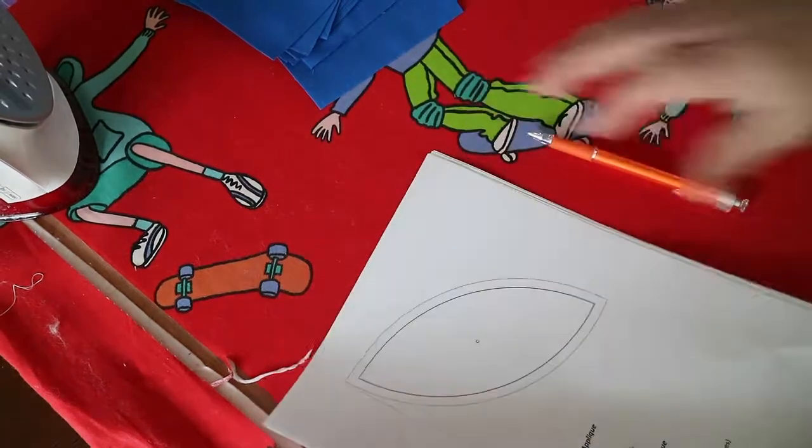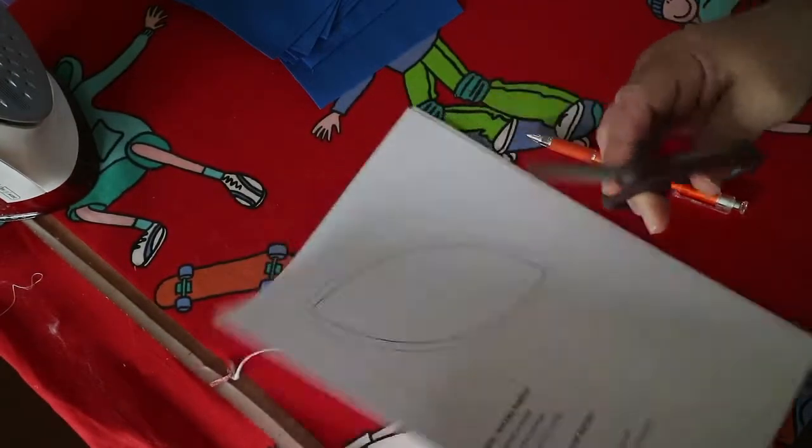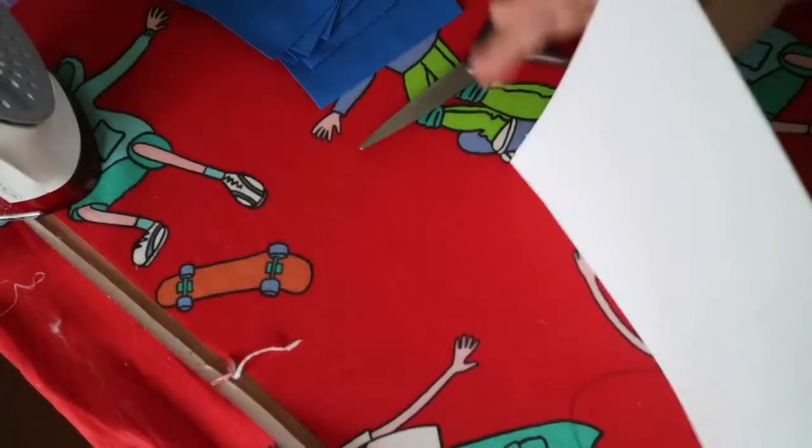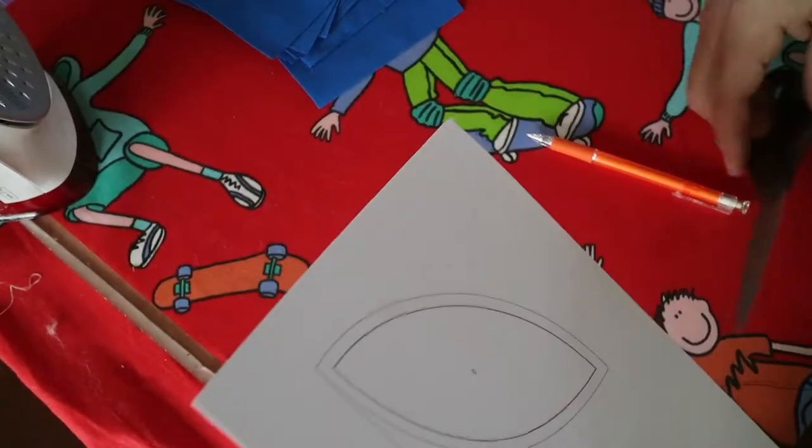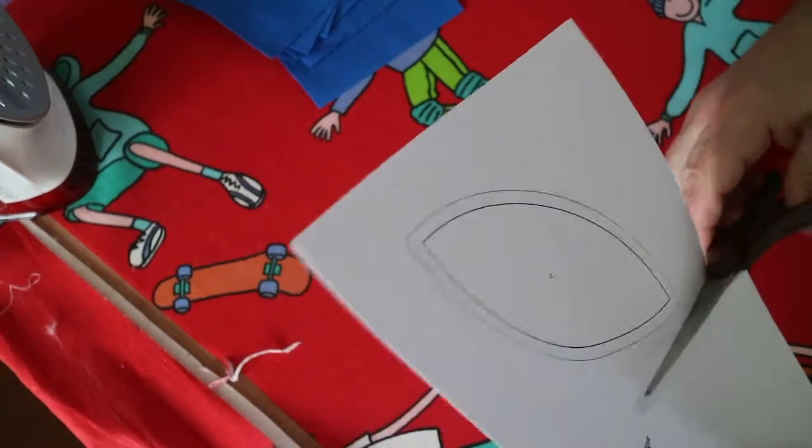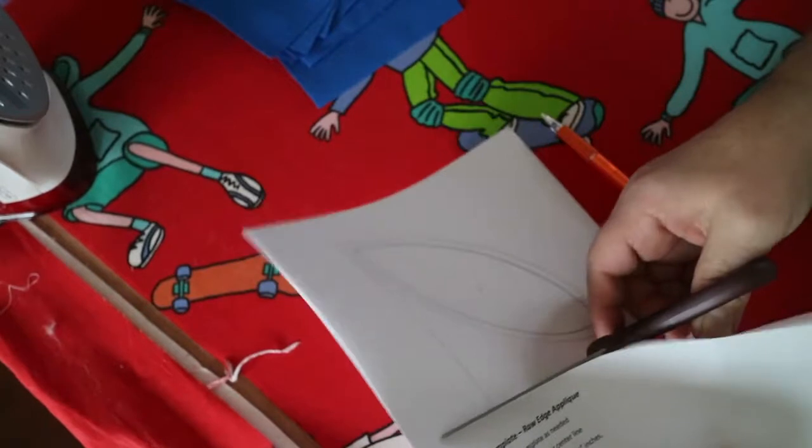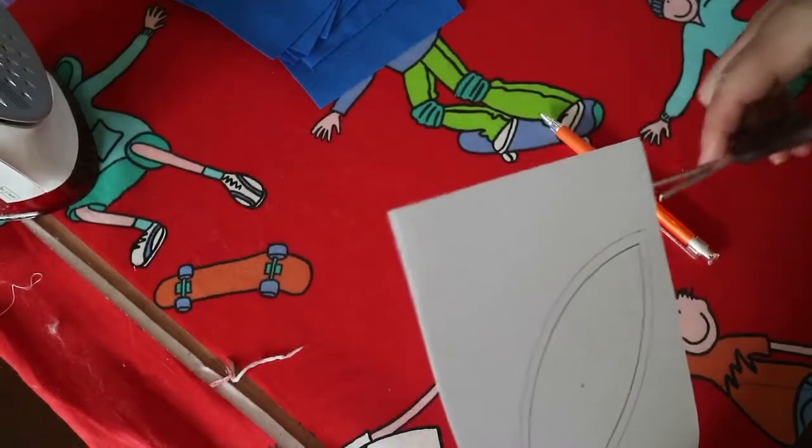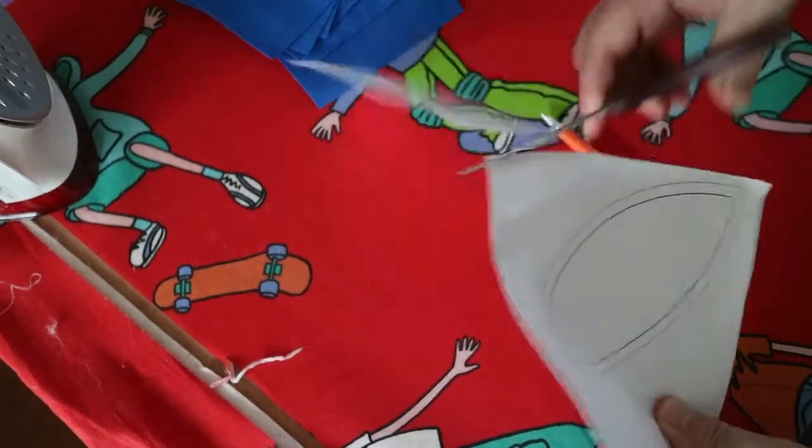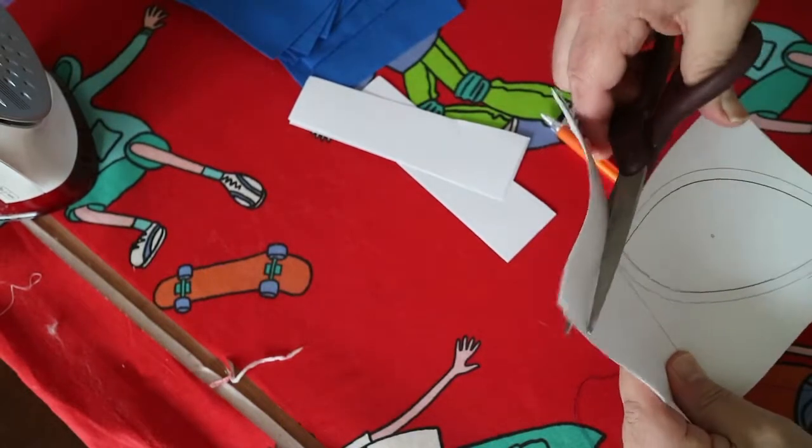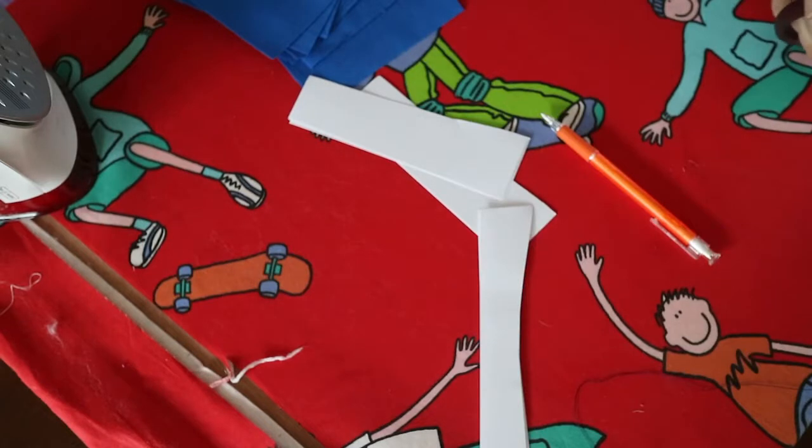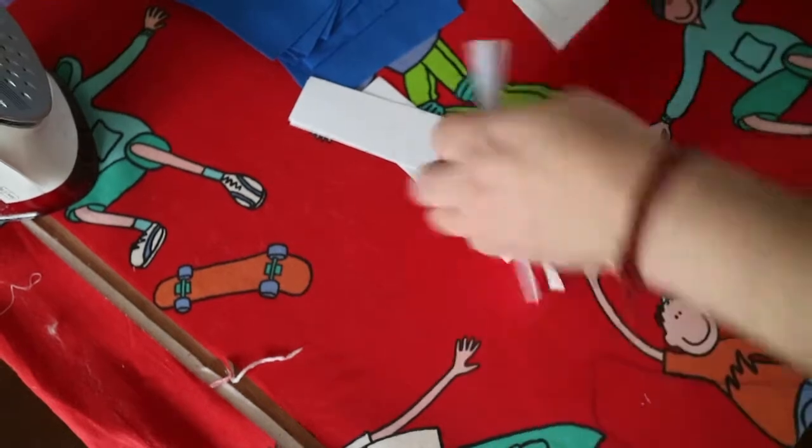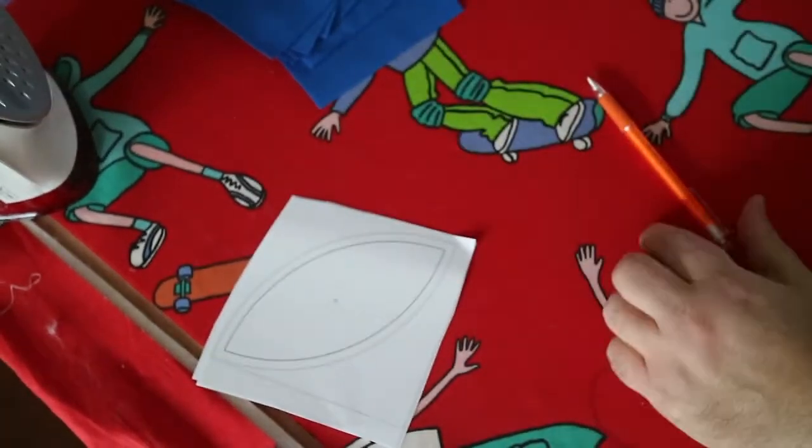We have our templates. I have my paper shears here, so we're just going to cut these out roughly. I made five copies for this demonstration. This is page four of your PDF. There we go, we have five basically rough templates.